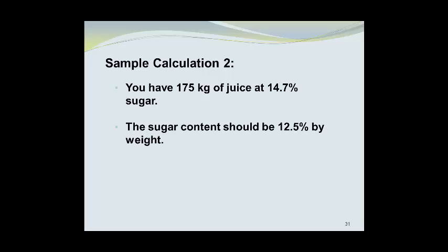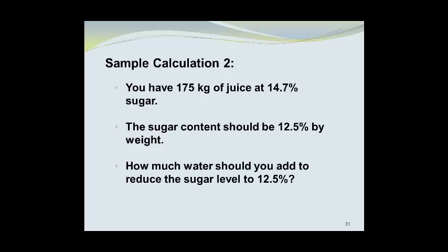In sample calculation number 2, we have 175 kilograms of juice at 14.7% sugar. The sugar content should have been 12.5% by weight. The question now is, how much water should you add to reduce the sugar level to 12.5% by weight?